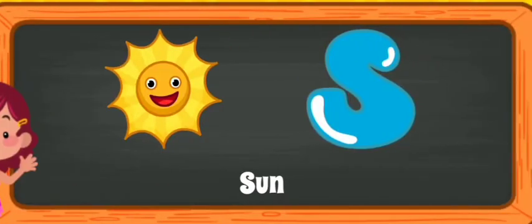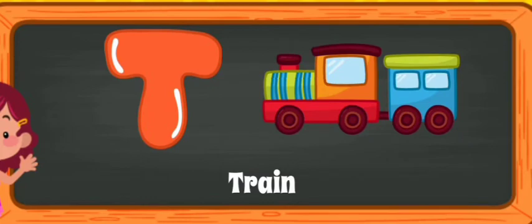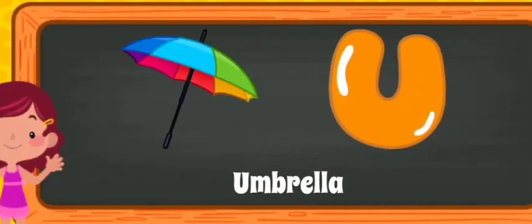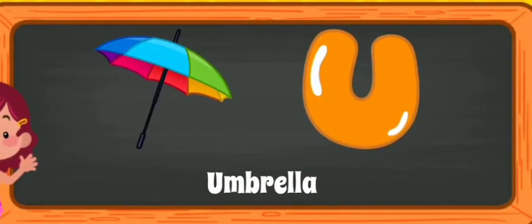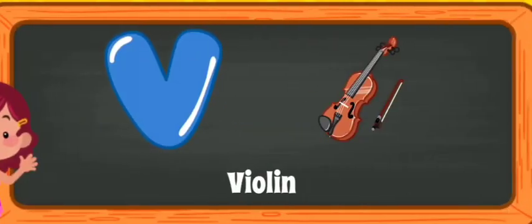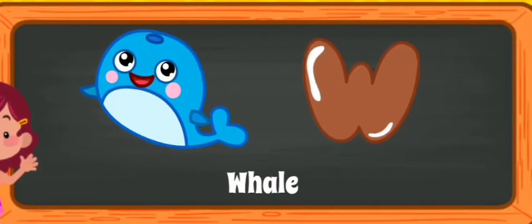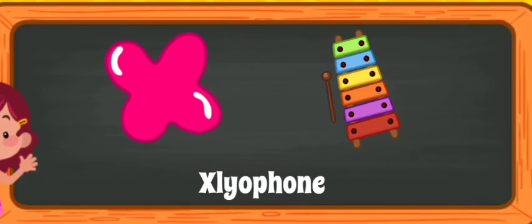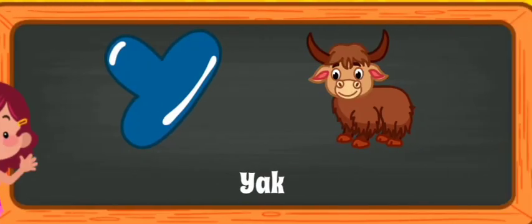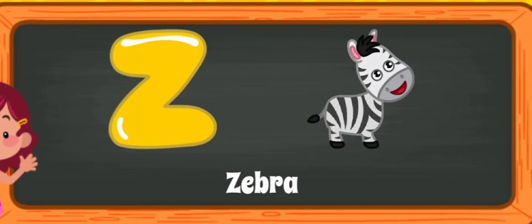S for Sun, T for Train, U for Umbrella, V for Violin, W for Whale, X for Xylophone, Y for Yak, Z for Zebra.